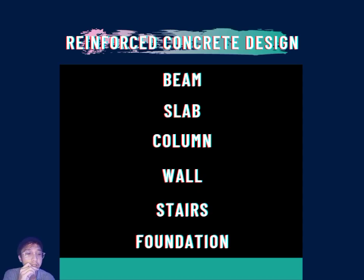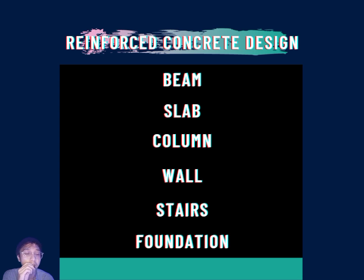There are six types of reinforced concrete design. The first one is beam, second is slab, third is column, fourth is wall, fifth is stairs, and lastly is foundation.